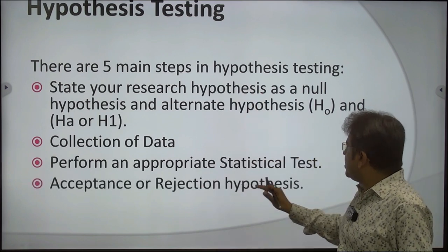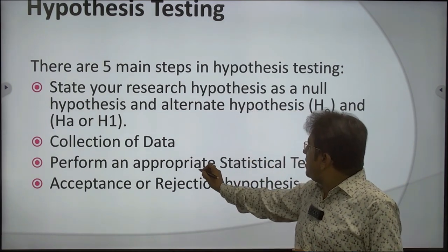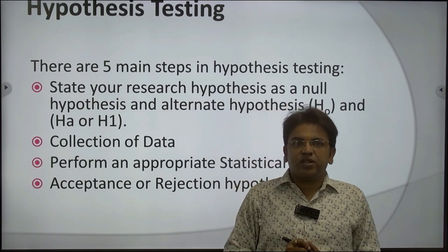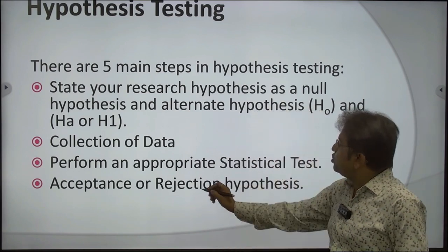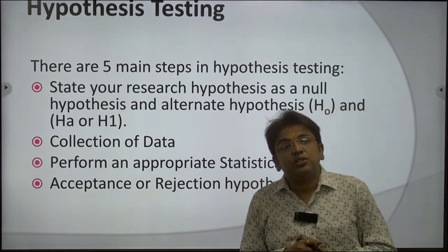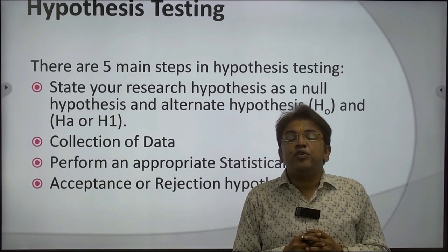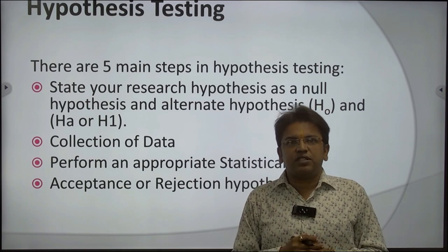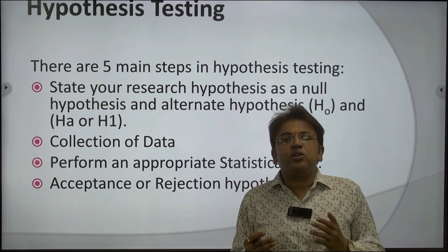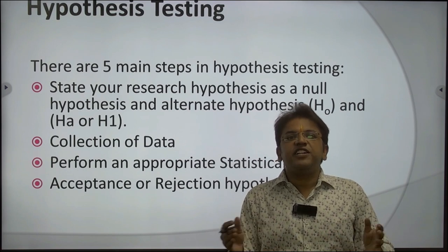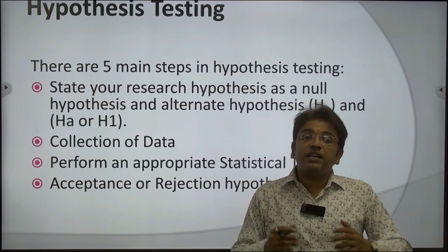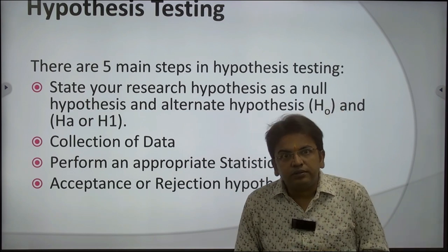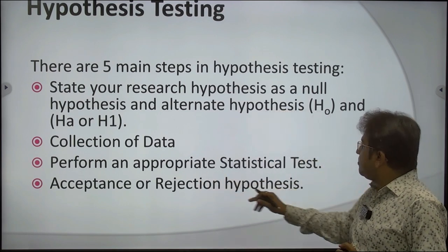The fourth step is acceptance or rejection of hypothesis. When applying a statistical test, we use degree of freedom and level of significance to accept or reject the hypothesis. For scientific study, one percent level of significance is used, while for behavioral study, five percent level of significance is used — because in scientific study it is a closed study, while in behavioral studies there is up to five percent change in a person's behavior from one place to another.